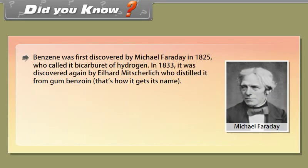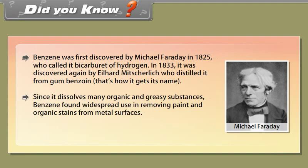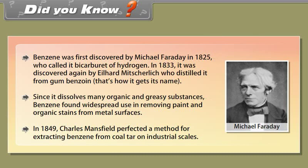Did you know? Benzene was first discovered by Michael Faraday in 1825, who called it bicarburet of hydrogen. In 1833, it was discovered again by Eilhard Mitscherlich, who distilled it from gum benzoin. That's how it gets its name. Since it dissolves many organic and greasy substances, benzene found widespread use in removing paint and organic stains from metal surfaces. In 1849, Charles Mansfield perfected a method for extracting benzene from coal tar on industrial scales.